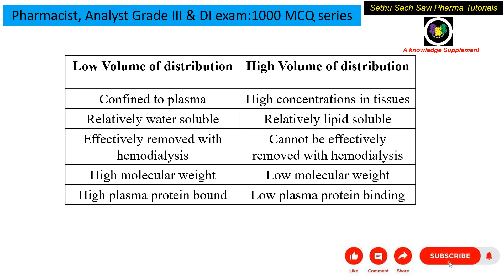Low volume of distribution means the drug is confined to the plasma region, while high volume of distribution means the drug is highly distributed with higher concentration in the tissue compartment. Drugs confined to plasma are more water soluble, while drugs in the tissue compartment are relatively lipid soluble. Drugs with low VD can be effectively removed by hemodialysis.